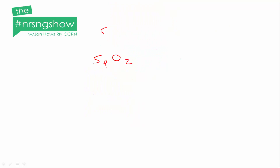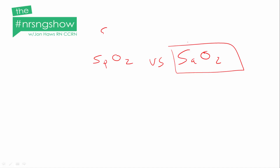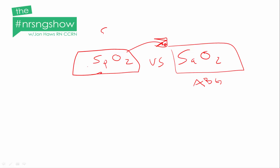SaO2 is the percent saturation of hemoglobin in the arterial blood. We use SpO2 as an indirect measure of this. SaO2 is the number we want to get, but in order to get it we need to do something like an ABG. So we use our pulse oximeter and get SpO2, which isn't as valid. This is why you should be trusting your instinct and your nursing assessment versus just the SpO2 monitor.